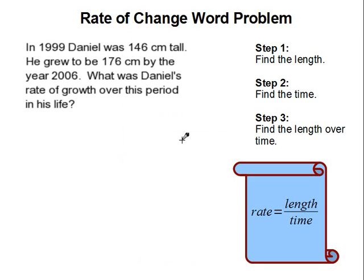Rate of change word problem. In 1999, Daniel was 146 centimeters tall. He grew to be 176 centimeters by the year 2006.